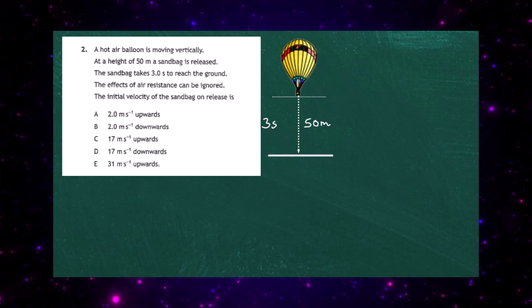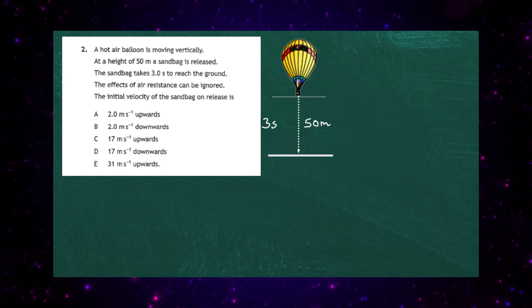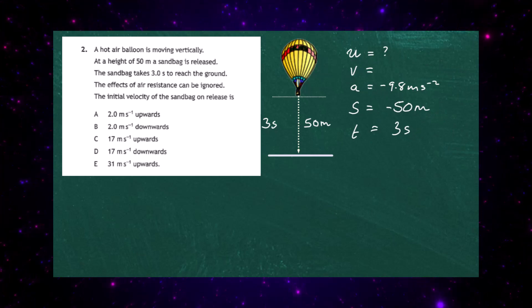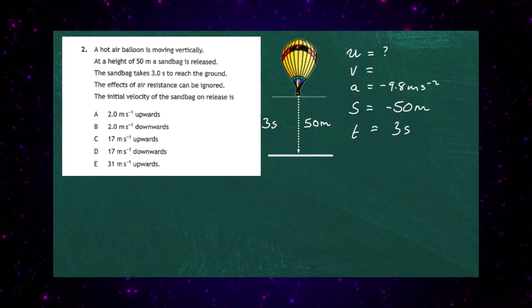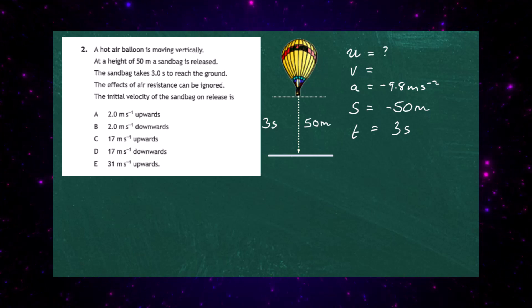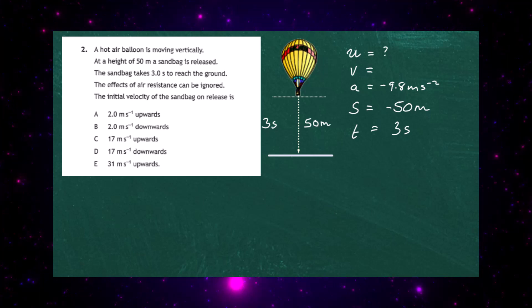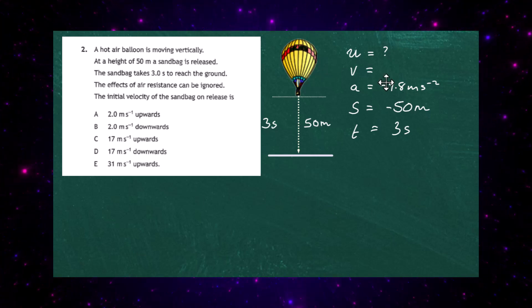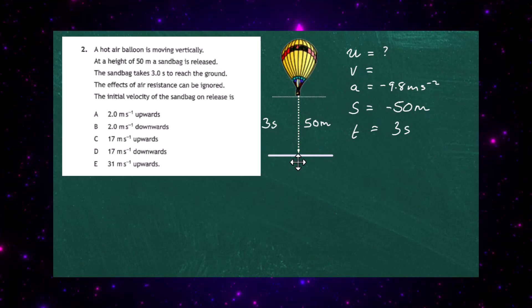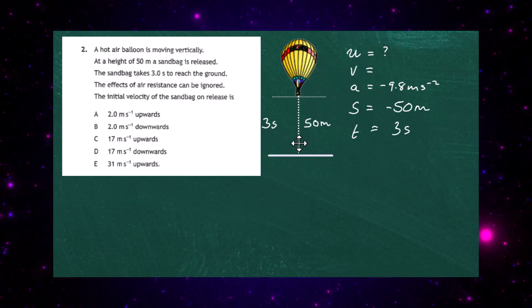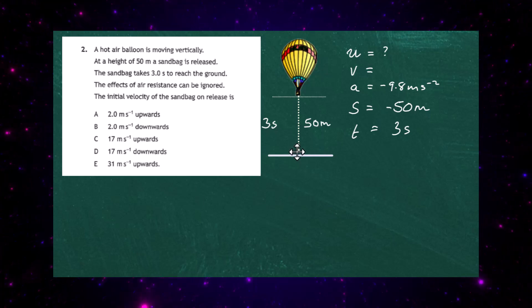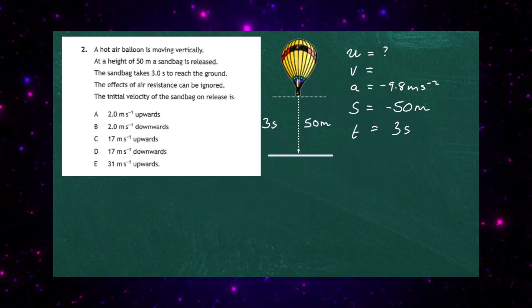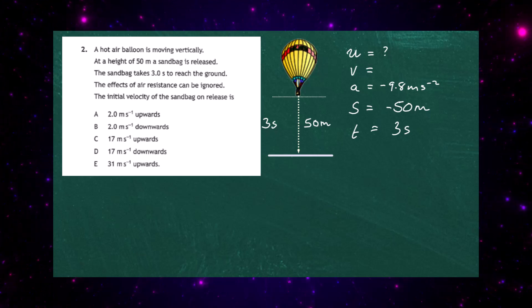Stick to the convention that everything going upwards is positive and everything going downwards is negative. With that convention, the initial velocity u is what we're after, so we put a question mark there. v is unknown so we can ignore it. The acceleration is minus 9.8 meters per second squared — gravity is downwards. The displacement is minus 50 meters because it's downwards from the starting point, and the time t equals three seconds.